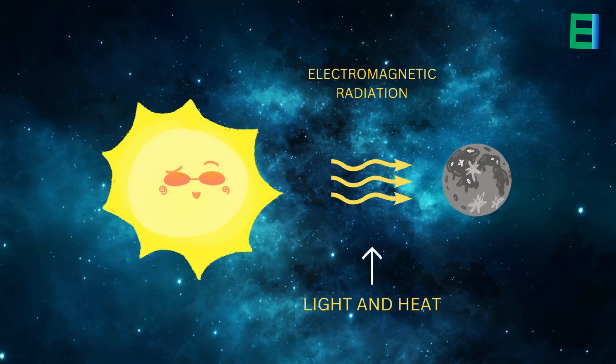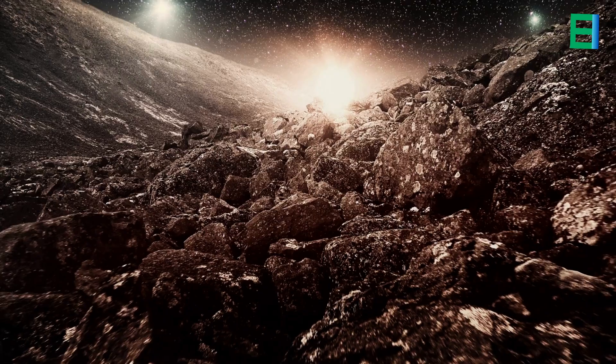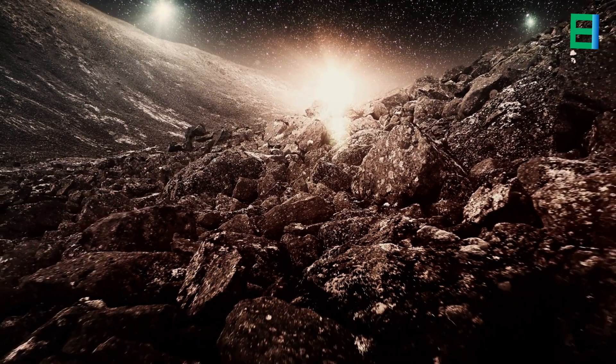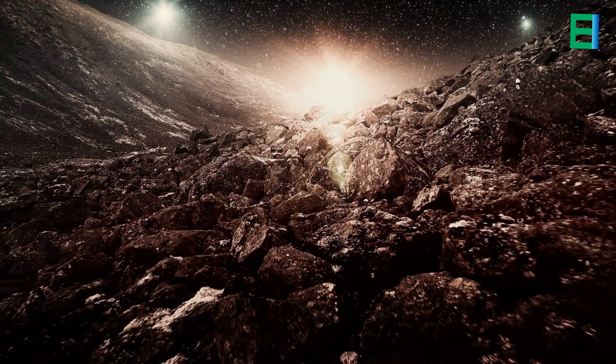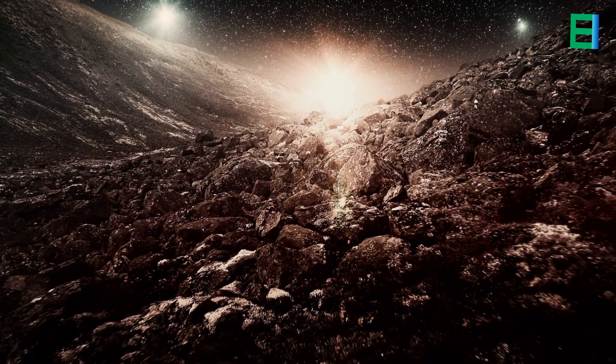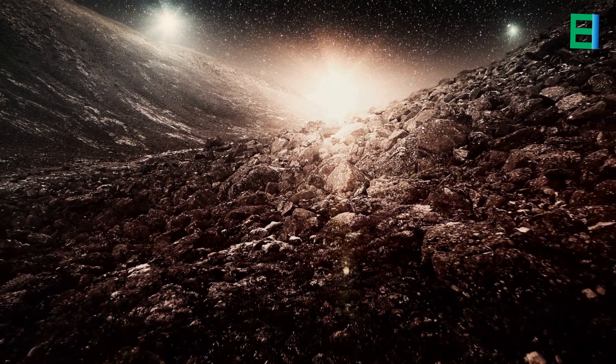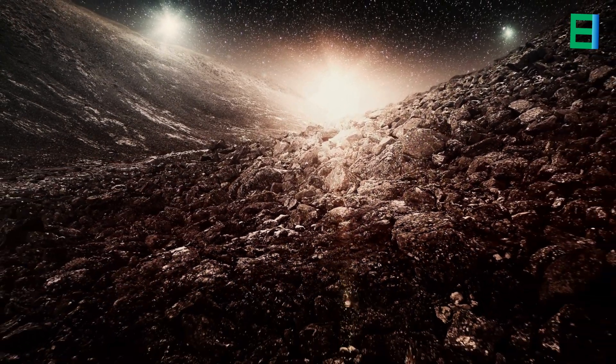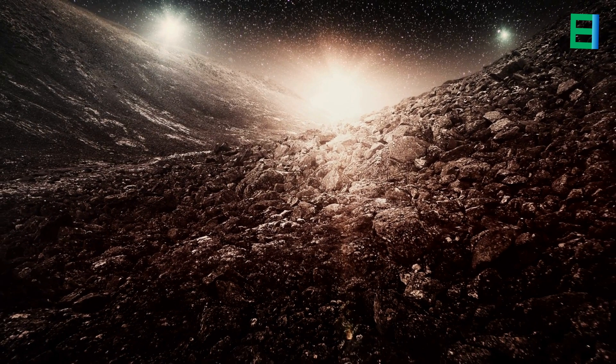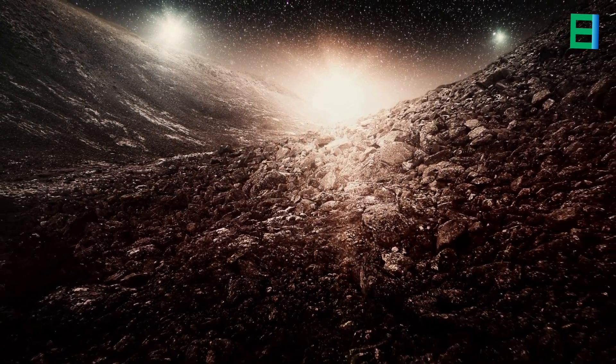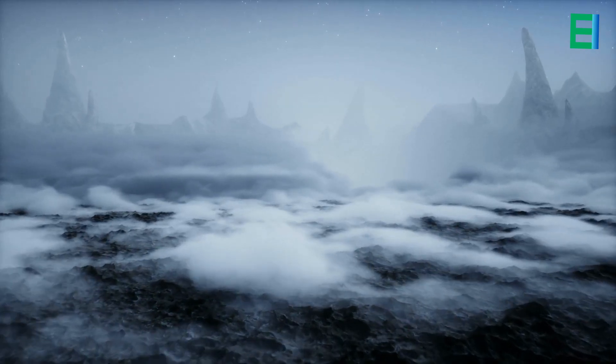Despite being the closest planet to the sun, some regions near Mercury's poles are permanently shadowed, meaning they never receive direct sunlight. These permanently shadowed craters act as cold traps, allowing temperatures to drop significantly.